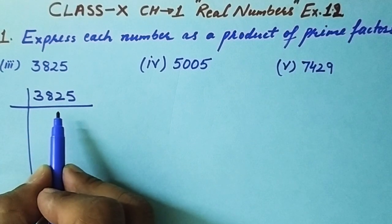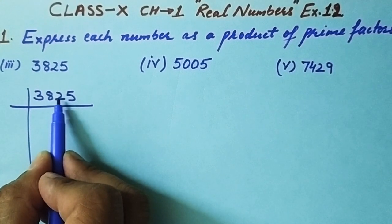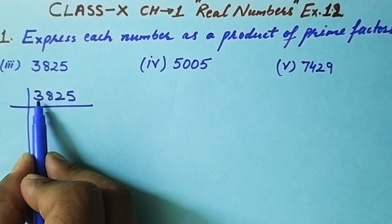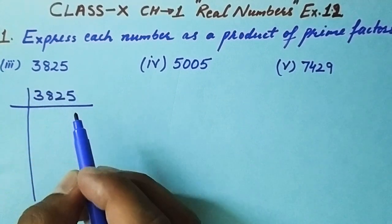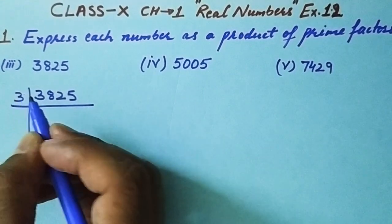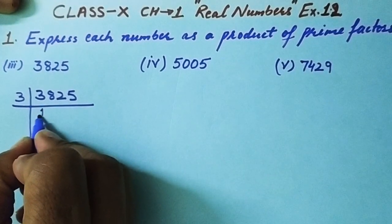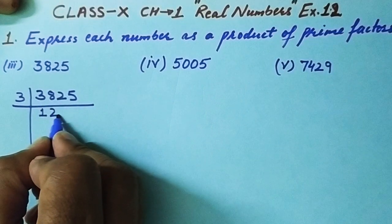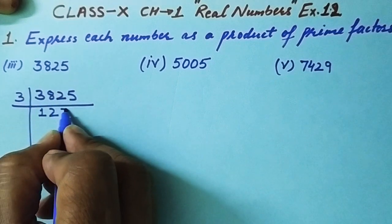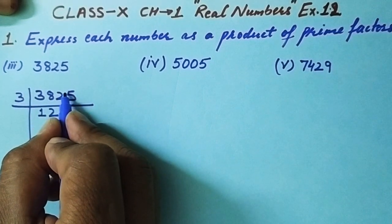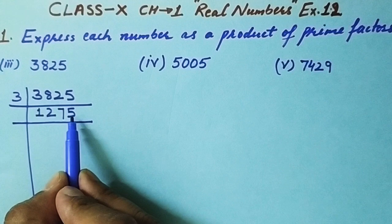To check divisibility by 3, we find the digit sum: 5 + 2 + 8 + 3 = 18. Since 18 is divisible by 3, the number 3825 is also divisible by 3. Dividing: 3825 ÷ 3 = 1275. Now checking 1275 with 3 again — digit sum is 1 + 2 + 7 + 5 = 15, which is divisible by 3. So 1275 ÷ 3 = 425.